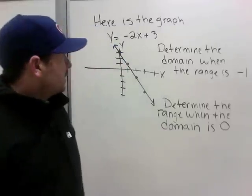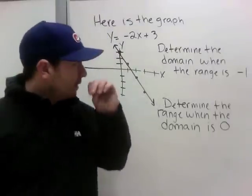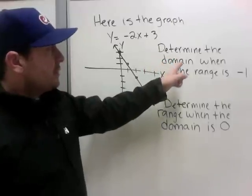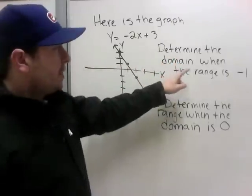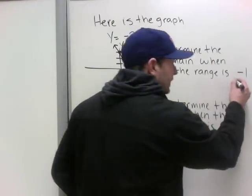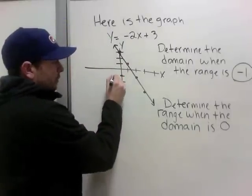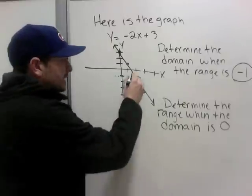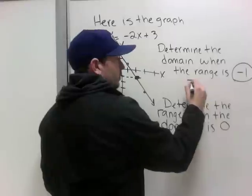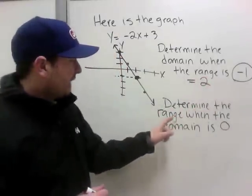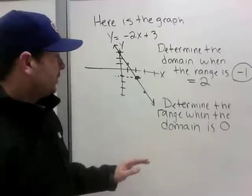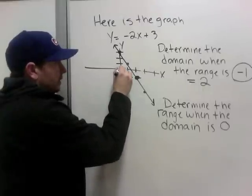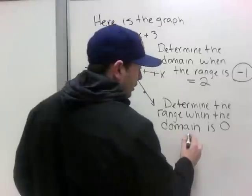Our last learning intention is to determine the domain when given a range, and the range when given a domain. Here's the graph y equals negative 2x plus 3. Determine the domain when the range is negative one: range is height, so find a height of negative one — that point corresponds to a domain (x value) of 2. Determine the range when the domain is zero: at x equals zero, the range (height) is 3.